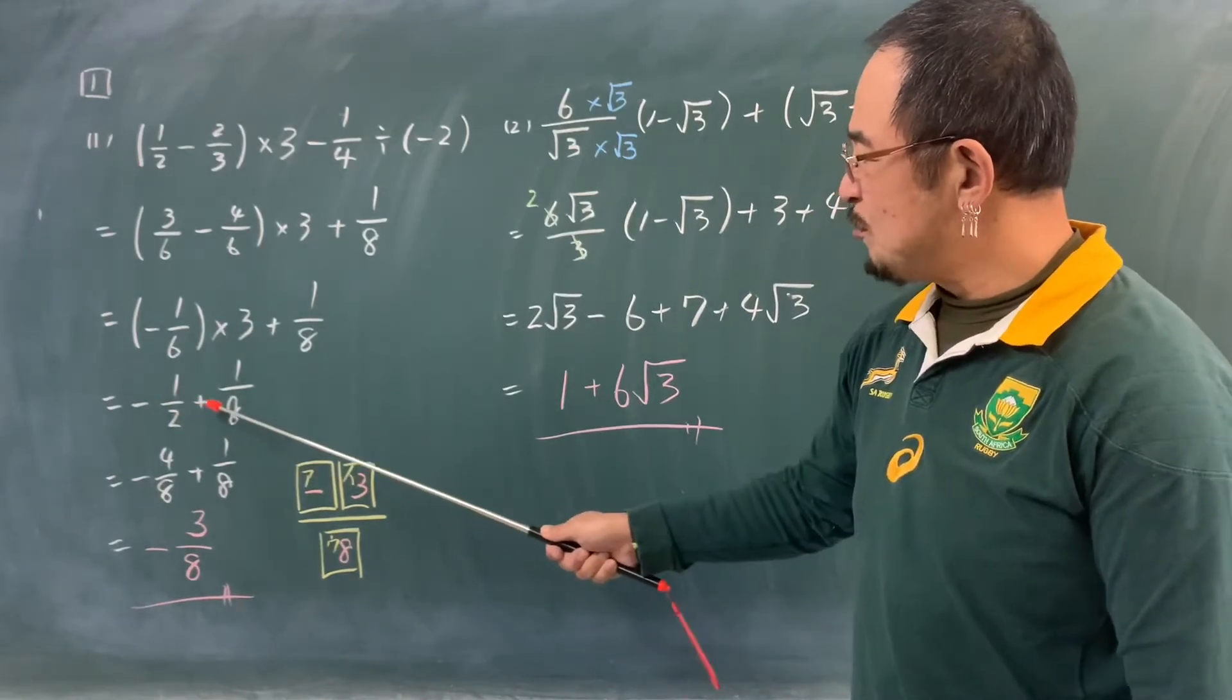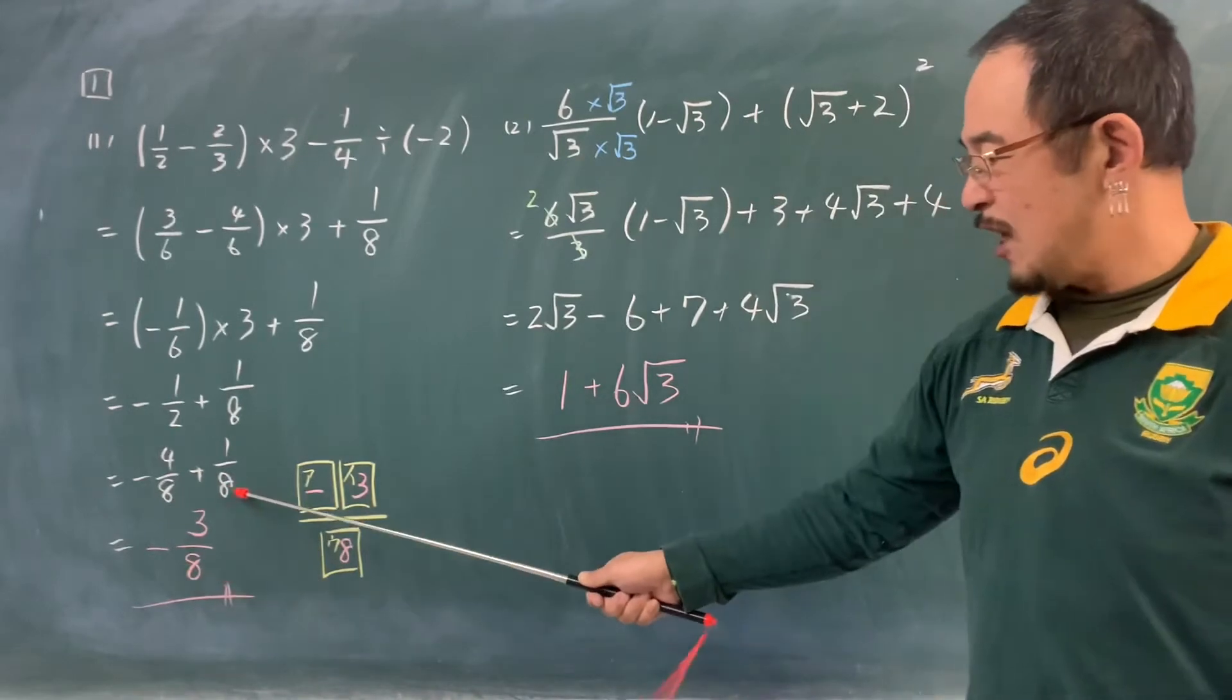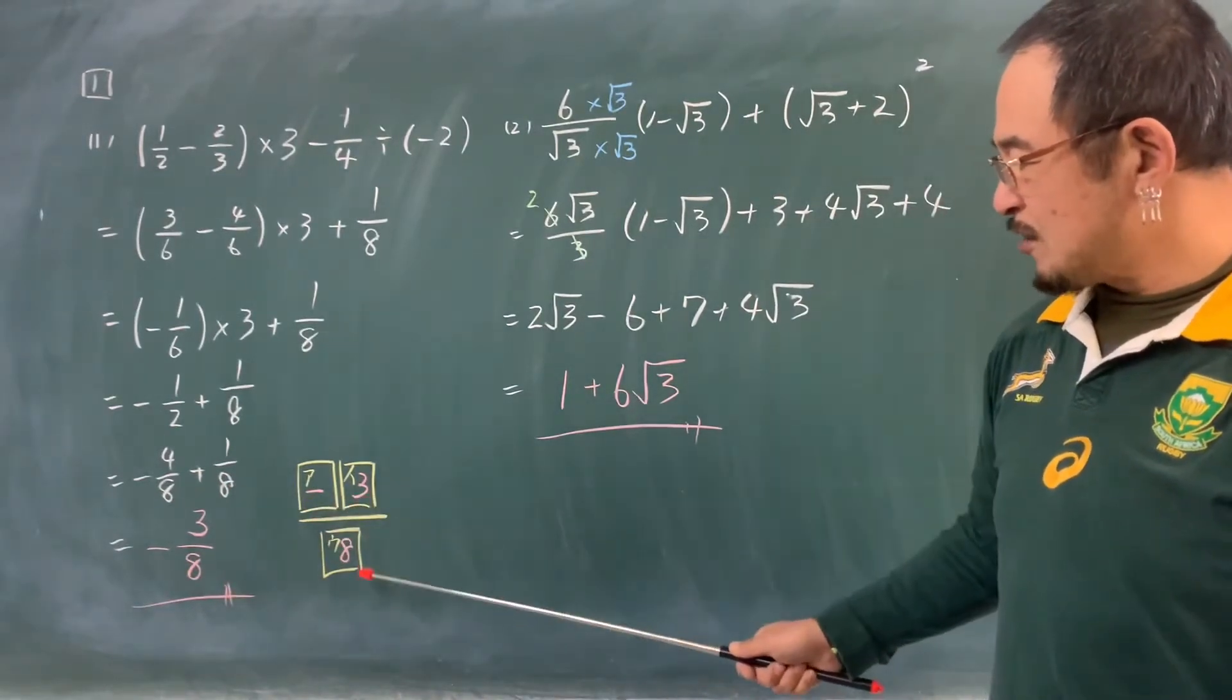マイナス2分の1プラス8分の1。割る2というのはかける2分の1ですから、通分して計算してマイナス8分の3。マークシートはこんな形ですからマイナス3、8と塗ってください。